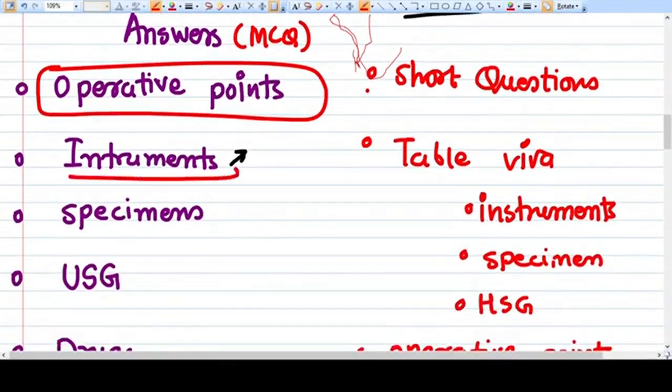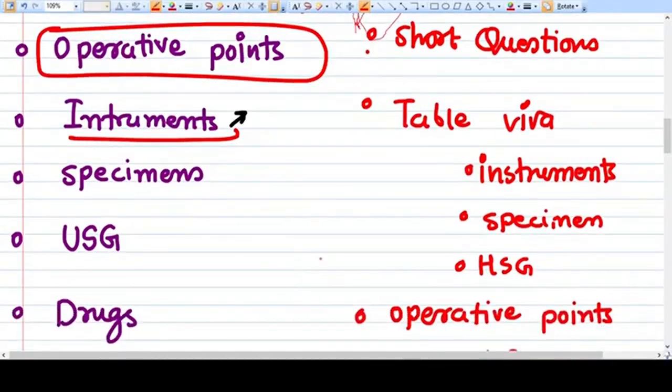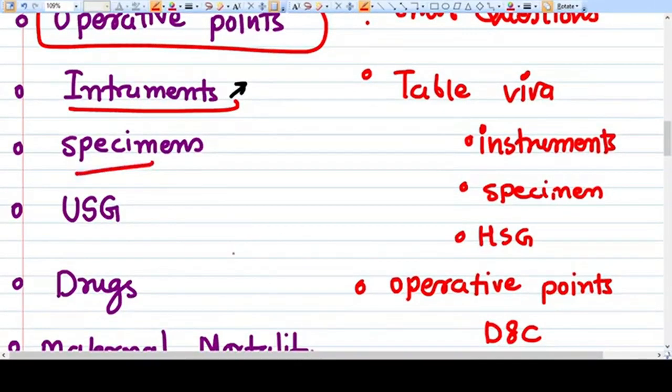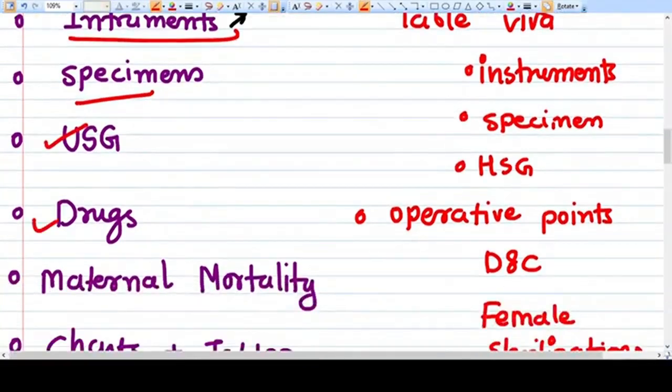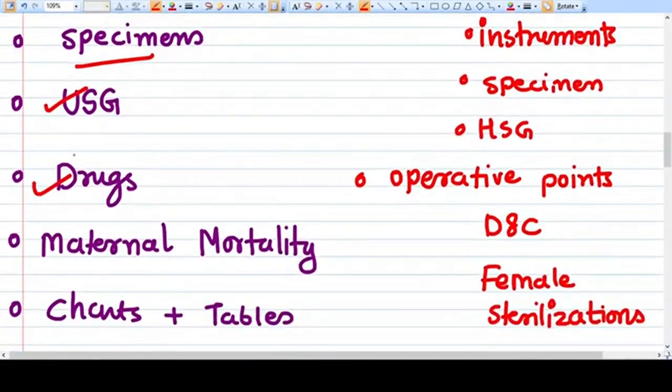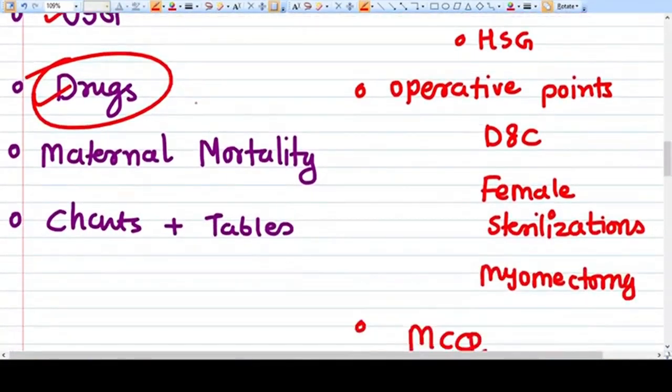The third thing is instrumentation, various instruments available and how to describe them, what are the functions of that instrument, and how to sterilize them. Various specimens are available like the specimen of placenta. Once you get the specimen of placenta, you must answer various questions about the placenta. It will also include ultrasonography pictures, drugs, the various drugs used in obstetrics and gynecology and their side effects and doses, and various practical questions about these drugs.